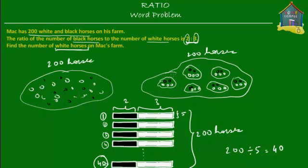So if this is group 1, group 2, group 3, and so on, there will be 40 groups in all, each with 2 black horses and 3 white horses. So if there are 40 groups each containing 3 white horses, the total number of white horses would simply be 40 times 3, which is 120. So the total number of white horses on Mac's farm is 120.